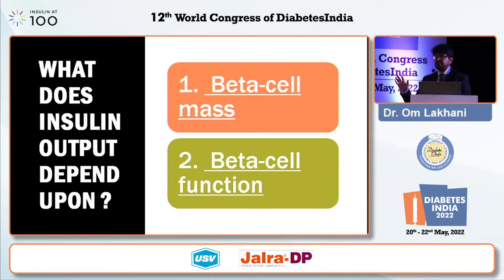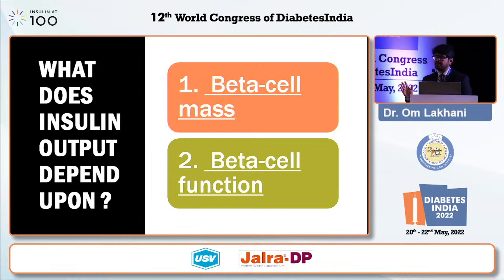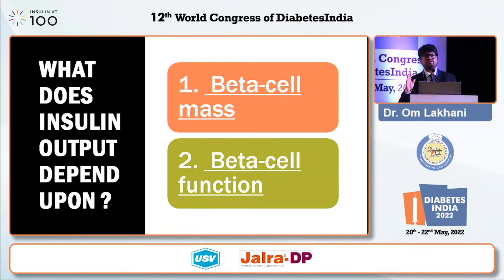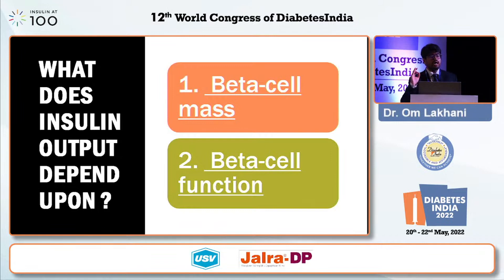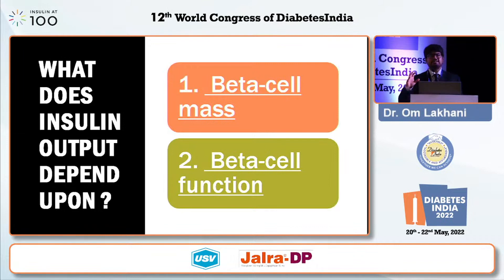The key question — and this is the key point of today's discussion — is whether we are dealing with a reduction of beta cell mass or a reduction of beta cell function. Does the beta cell reduce in number or does it become less functional? That's the key difference.